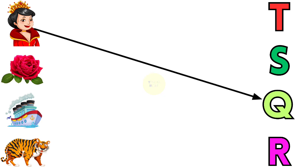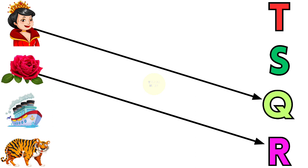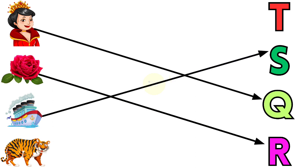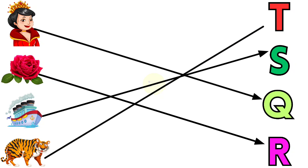Q for Queen, R for Rose, S for Ship, T for Tiger.